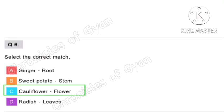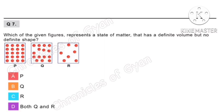Question 7. Which of the given figures represents a state of matter that has a definite volume but no definite shape? The state of matter liquid has definite volume but no definite shape. The answer is option B, that is Q.